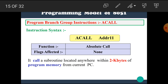The next instruction is ACALL, meaning absolute call. Absolute call requires an 11-bit address. It calls a subroutine located within 2 KB of program memory from the current PC. Whenever the absolute call is used, it requires an 11-bit address and its range is within 2 KB.